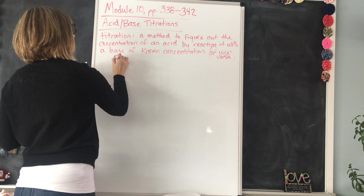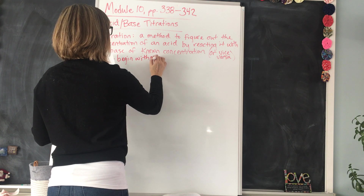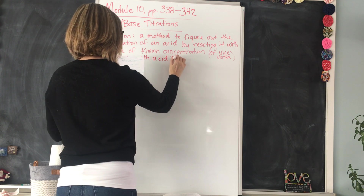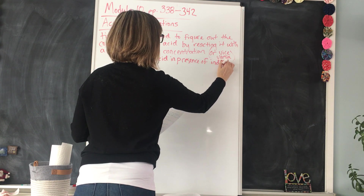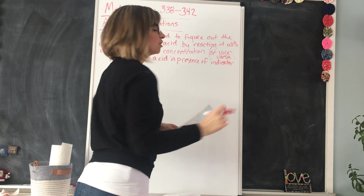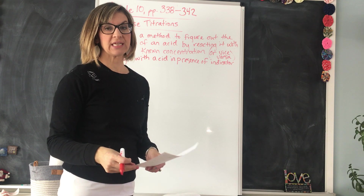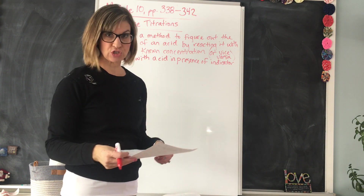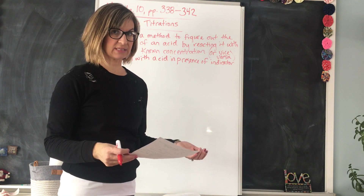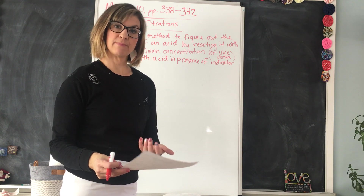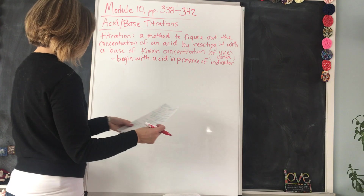Here are the steps. You begin with the acid in the presence of an indicator. The indicator shows you by its color that the solution is acidic. The indicator you'll be using in Experiment 10.2 is cabbage juice. Cabbage juice turns red in the presence of an acid and blue in the presence of a base, so it acts as an indicator. You start with the acid in the cabbage juice.